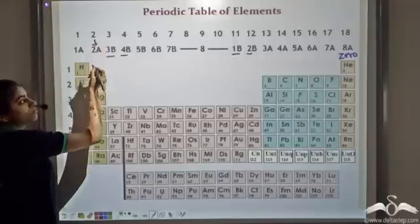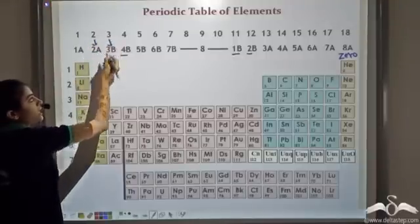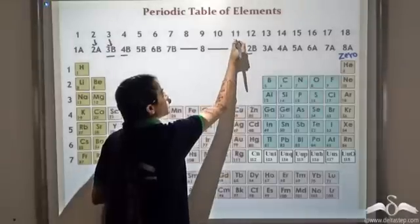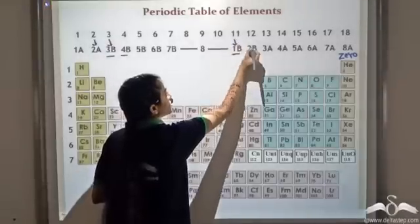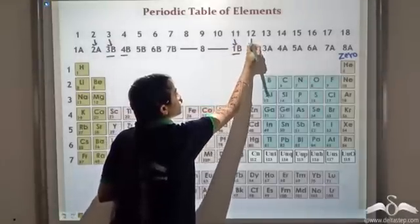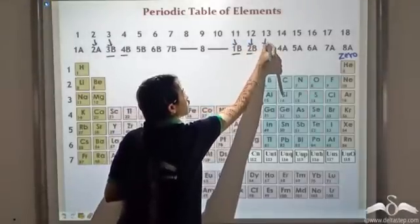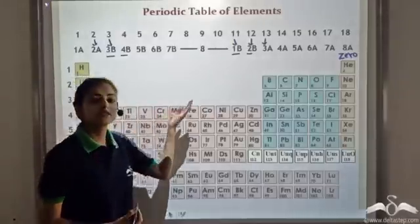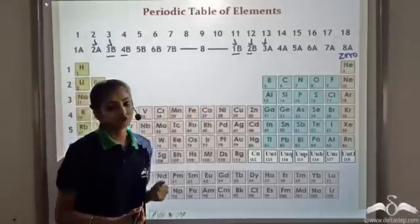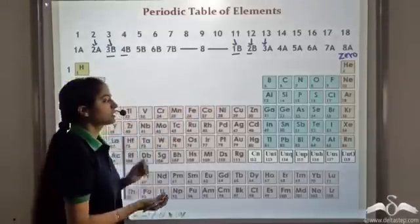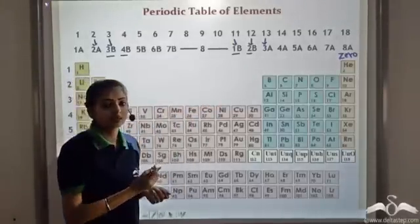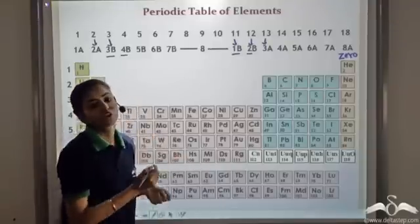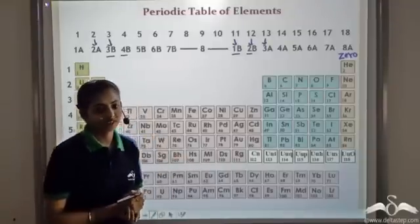If you observe, 2A lies below 2, 3B lies below 3. Similarly, 1B lies below 11, 2B below 12, 3A below 13, and so on. This is a very systematic arrangement of elements. By arranging the elements in this manner, Henry Moseley was able to give a very well-organised periodic table.